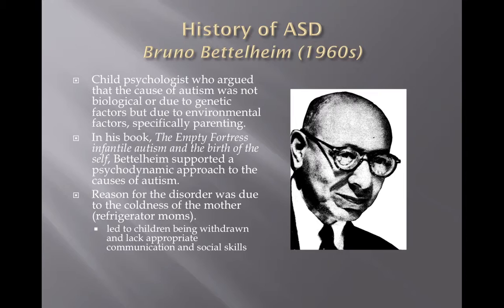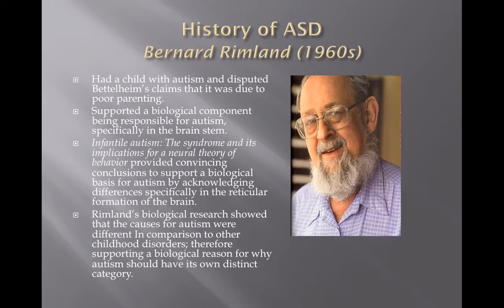Then we move on to Bruno Bettelheim. In the 1960s, there were two individuals — Bruno Bettelheim and Bernard Rimland — who really argued about the causes of autism, and this is important because it helped with the current categorization of autism. Bettelheim wrote in his book The Empty Fortress that the main cause of autism was environmental factors, specifically parenting — he felt the disorder was due to the coldness of mothers, and he called them refrigerator moms. Bernard Rimland, who actually had a child with autism, disputed Bettelheim's claims and suggested a biological component, specifically in the brainstem. His work supported a biological basis for autism and disproved Bettelheim's environmental theory, showing that autism was different from other childhood disorders and therefore deserved its own distinctive category.